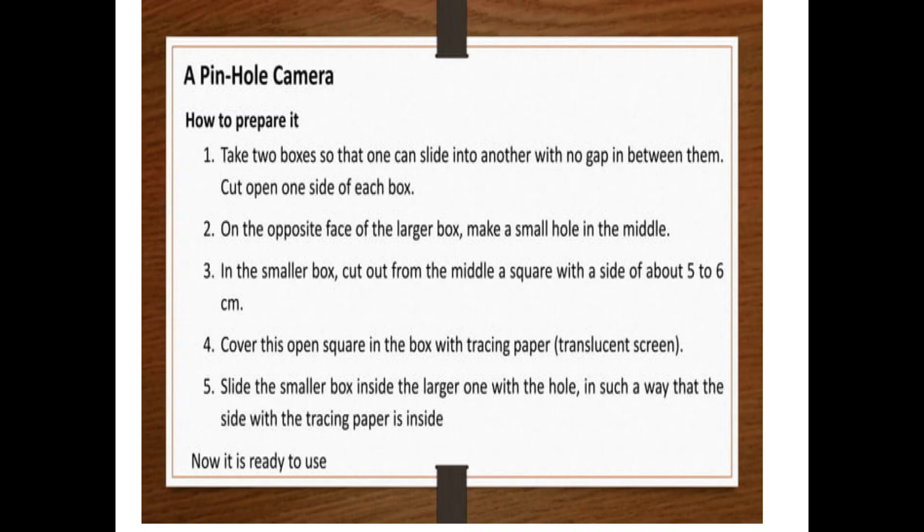In the smaller box, cut out from the middle a square with a side of about 5 to 6 cm and cover that open square in the box with tracing paper or butter paper. Now it is a translucent screen. Now slide the smaller box inside the larger one with a hole in such a way that the side with the tracing paper is inside. It means both closed sides should be outside and open must be inside. Now it is ready to use.